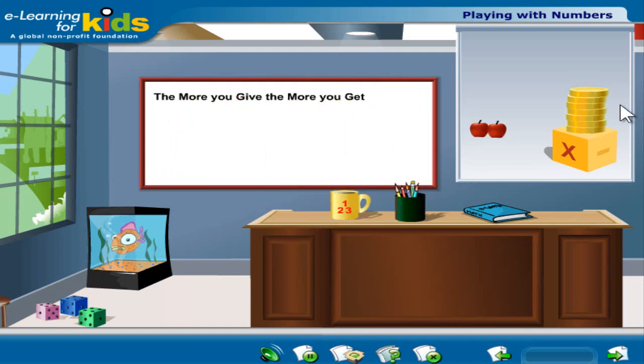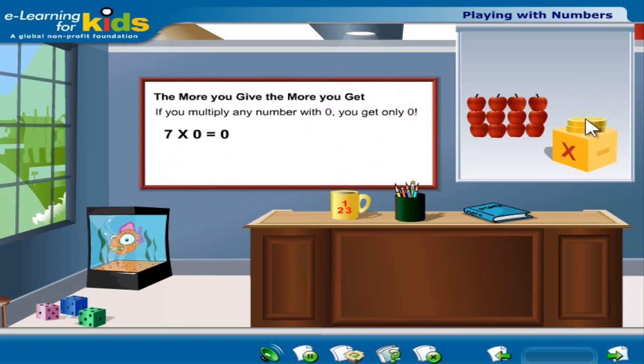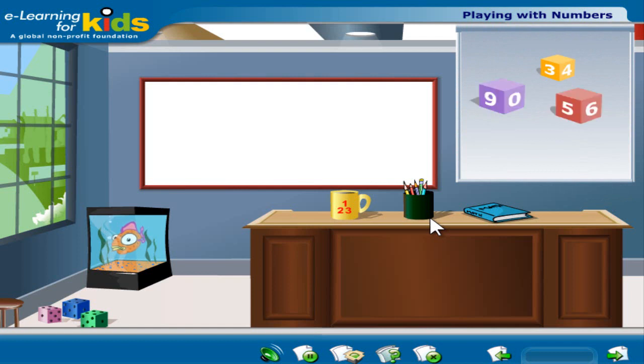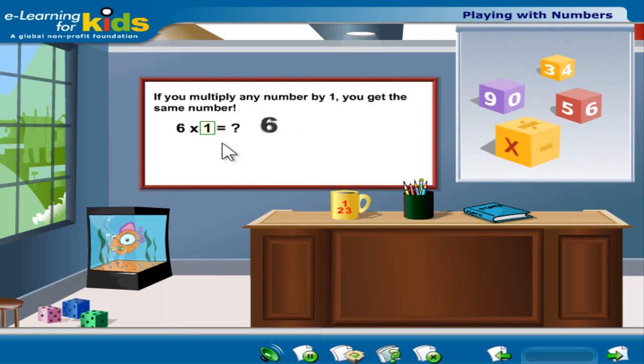Do you know what happens if you multiply 0 with any number? If you multiply any number with 0, you get only 0. Now guess what happens if you multiply any number by 1? If you multiply any number by 1, you get the same number.